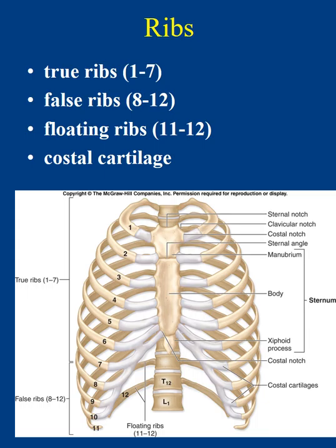The ribs are elongated curved flattened bones originating from the thoracic vertebrae and ending in the anterior thoracic wall. Ribs one through seven are true ribs because they connect individually to the sternum by separate costal cartilage extensions. Ribs eight through twelve are false ribs because their costal cartilage does not directly attach to the sternum; ribs eight through ten fuse to the costal cartilage of rib seven and thus indirectly articulate with the sternum. Ribs eleven and twelve are floating ribs because they have no connection to the sternum.